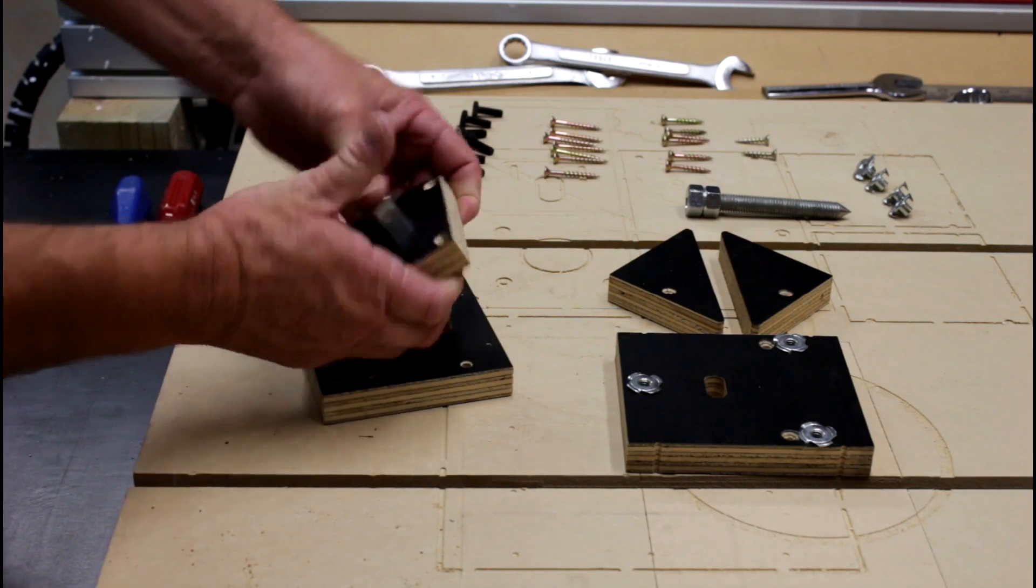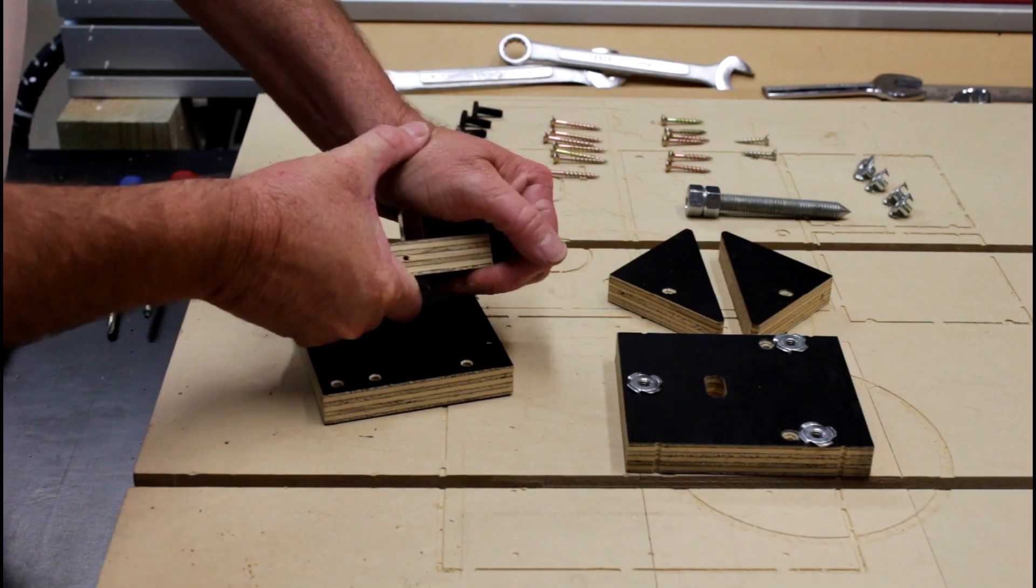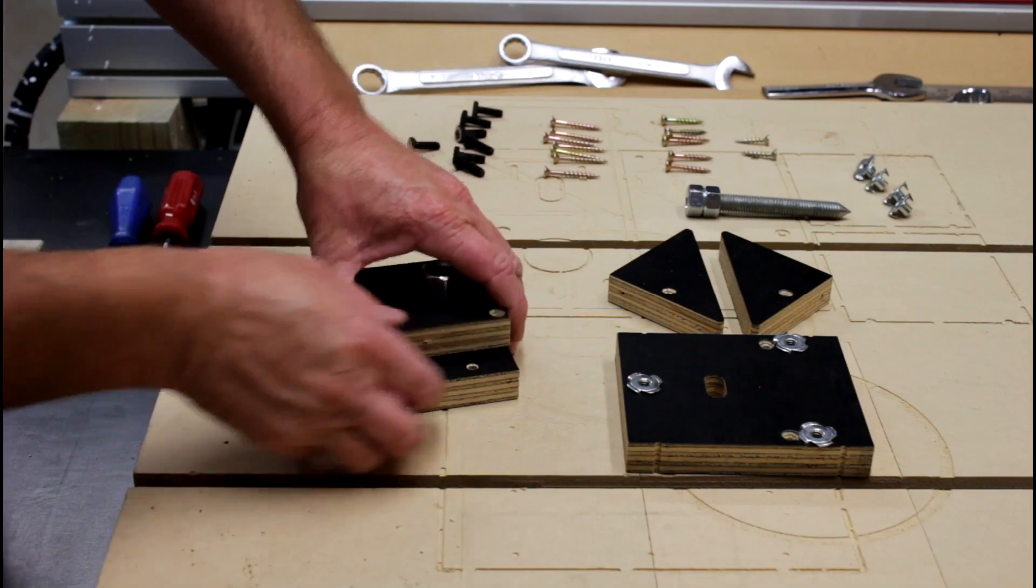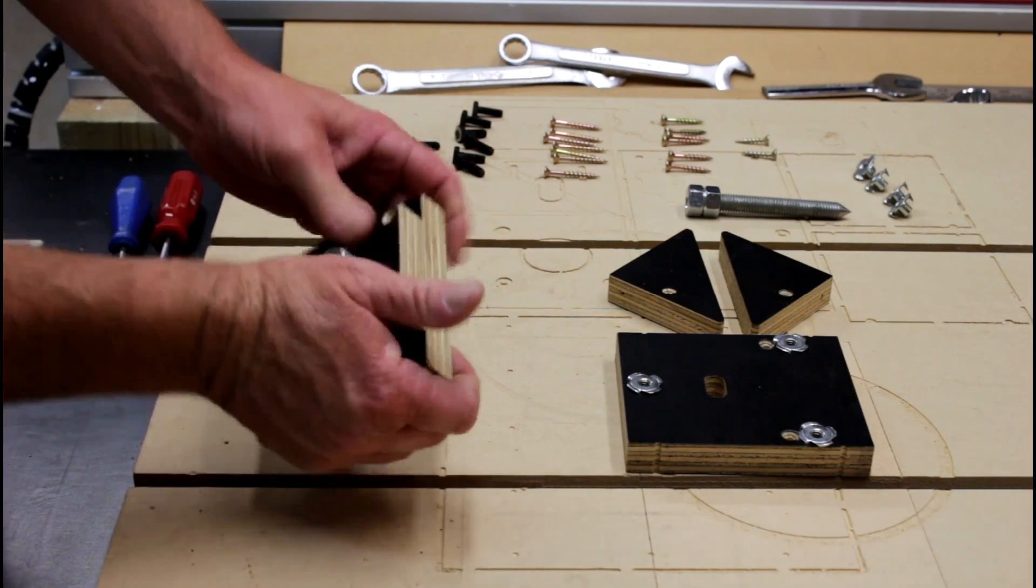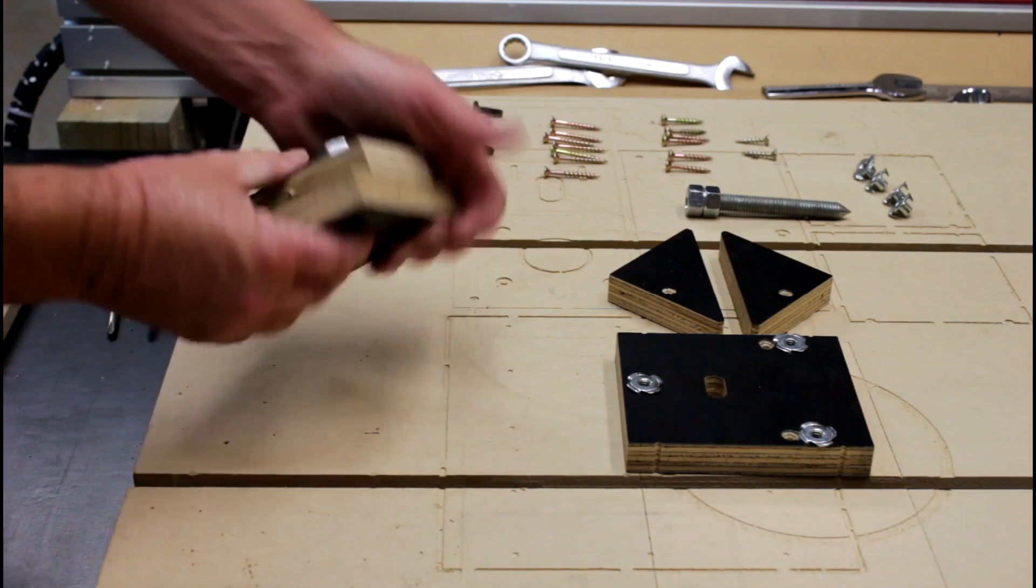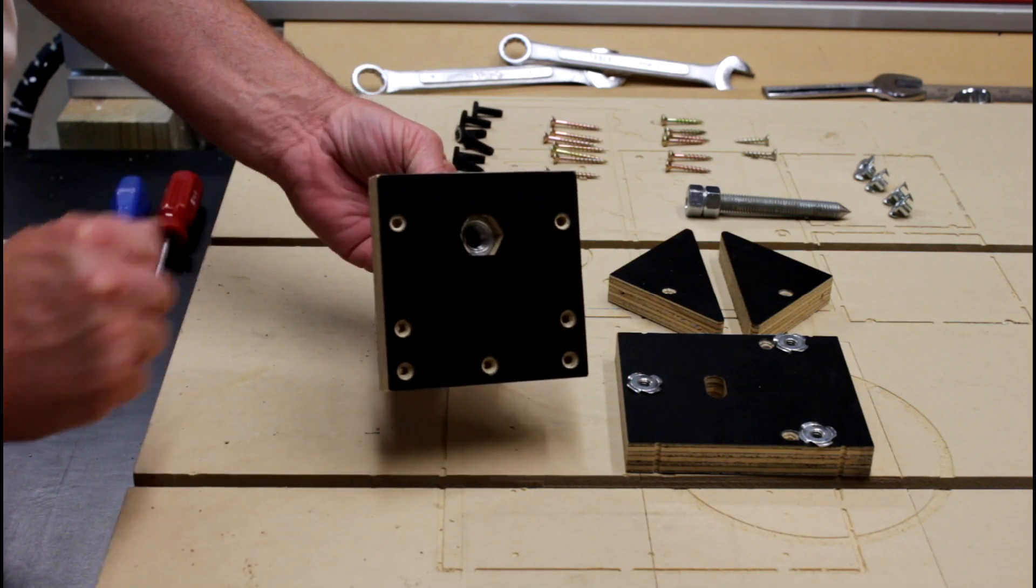push this coupling nut into this piece here. And then we push that through so it goes into the second piece. And with a hammer I'm going to tap it so it ends up flush on this side here.